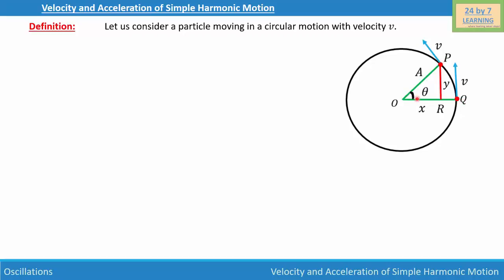The particle makes an angle theta, and the radius of the circular path is A. We create a right triangle O, P, R where OR is x, PR is y, and OP is A. This is a right triangle, and the particle is moving with velocity v which is tangential to the circular path.